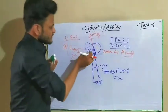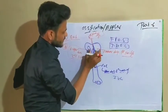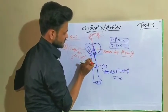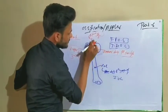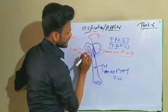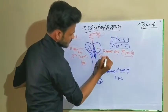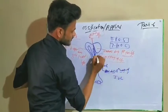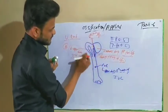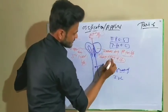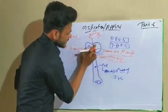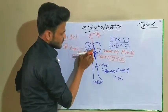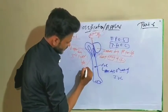These three secondary ossification centers fuse and form a conjoint epiphysis during the seventh year of life. This conjoint epiphysis then fuses with the shaft during the 20th year of life.